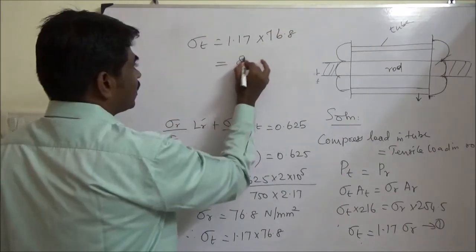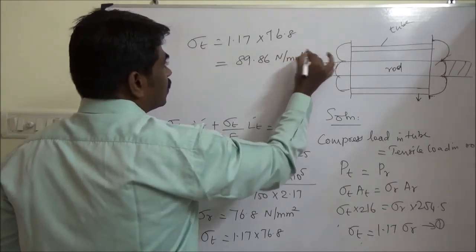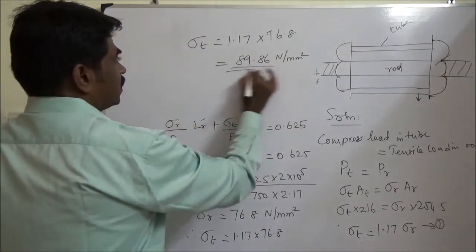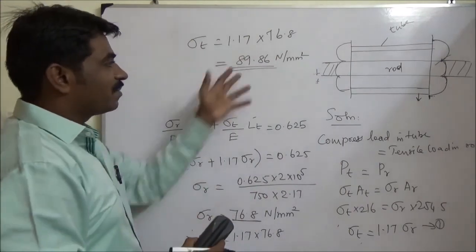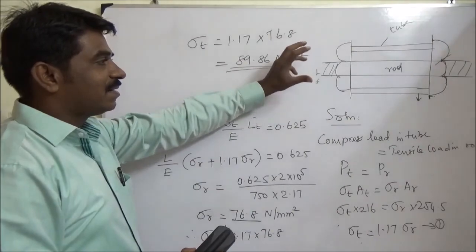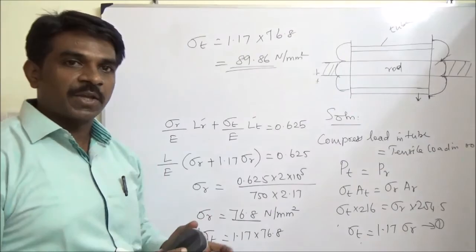Sigma t equal to 1.17 into 76.8 equal to 9.86 closer to 90. So these are the values. This is happening because of the turn of the nut. Is this okay? Fine. Thank you.